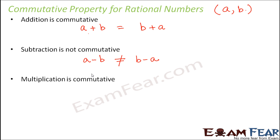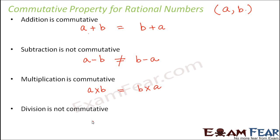Similarly, when it comes to multiplication, a multiplied by b is equal to b multiplied by a, so the commutative property holds true for multiplication. What about division? In division it doesn't hold true — that is, a divided by b is not equal to b divided by a. We will take examples of rational numbers to prove how addition and multiplication are commutative and why subtraction and division are not.